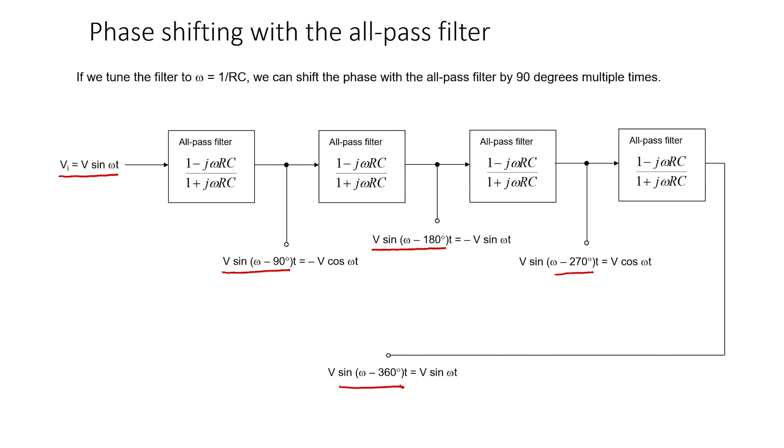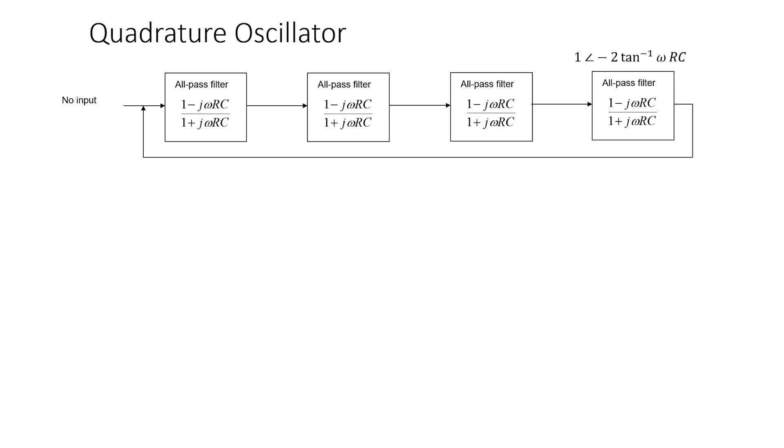After the fourth filter, we end up with a signal that's equivalent to the signal that we input to the first filter. If we connect the output back to the input and remove the signal generator from the circuit, we end up with something called a quadrature oscillator.